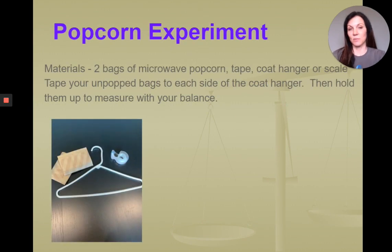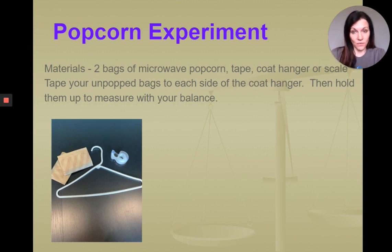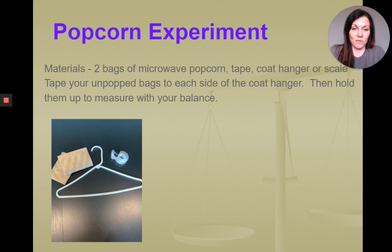I have devised experiments to do at home this week to measure and see how the law of conservation of mass might apply. In our popcorn experiment, you're going to need two bags of microwave popcorn, some tape, and a coat hanger — or a scale if you have one. You're going to take your unpopped bags of popcorn and attach them to each side or opposite ends of your coat hanger. Hold them up to see if they balance.